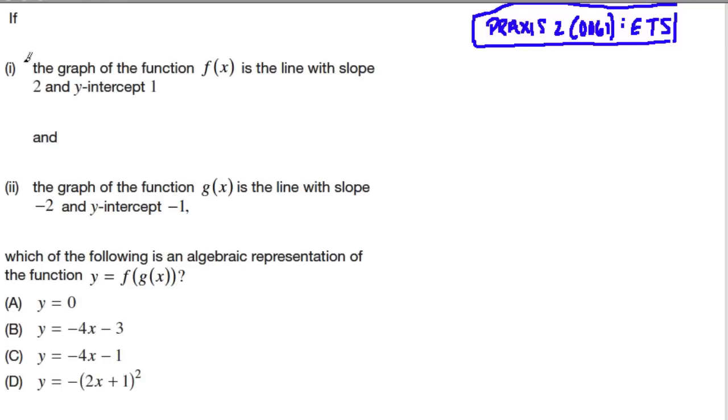So here it says, if we have, first of all, a graph of the function f(x), and it's the line with the slope of 2 and a y-intercept of 1. And then the graph of the function g(x), it's the line with the slope of negative 2 and y-intercept of negative 1. Which of the following is an algebraic representation of the function y equals f of g of x?